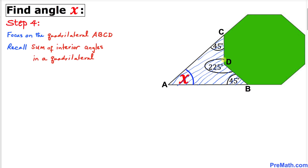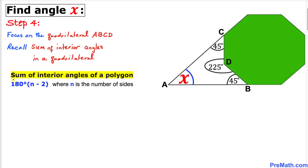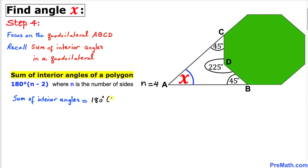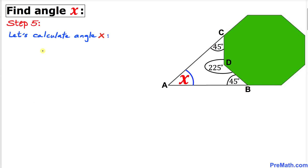Now let's focus on quadrilateral ABCD and recall the sum of interior angles of a polygon. Using the formula 180 degrees times (n minus 2), where n equals 4 for a quadrilateral, the sum of interior angles is 180 times (4 minus 2), which equals 180 times 2, giving us 360 degrees.